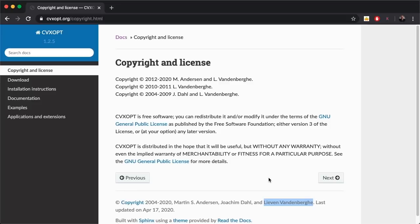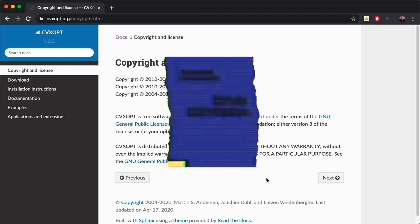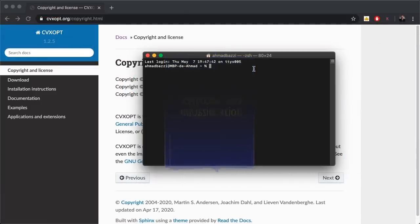To get CVXOPT on your machine, if you're using a Mac you open terminal, and if you're using Windows you can open your command window and type pip3 install cvxopt.